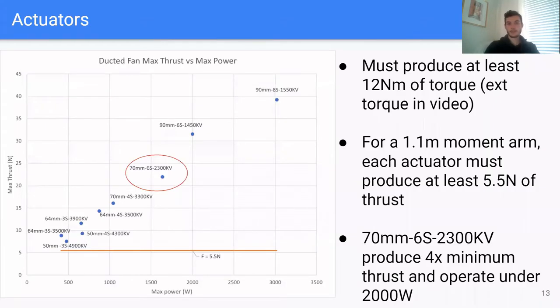For the actuators, we determine they must produce at least 12 newton meters of torque. And for a 1.1 meter moment arm, that means each actuator must produce at least 5.5 newtons of thrust. Looking at the comparison of ducted fans, we can see the 70 millimeter ducted fans produce four times the minimum thrust while also operating under 2000 watts. This gives us a good balance between power and battery life.